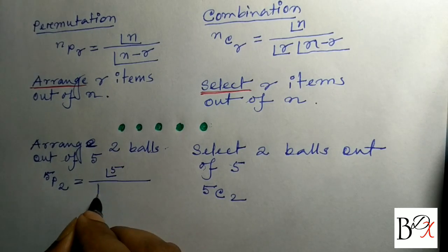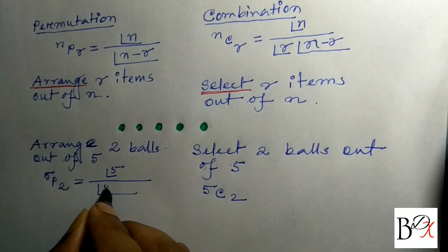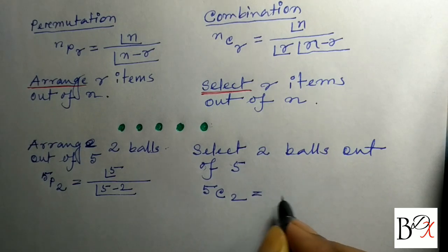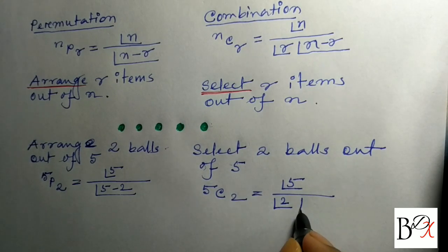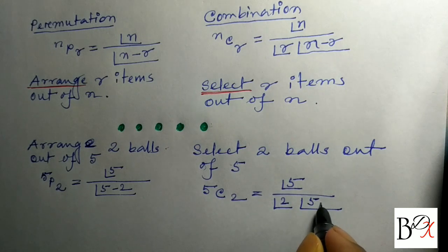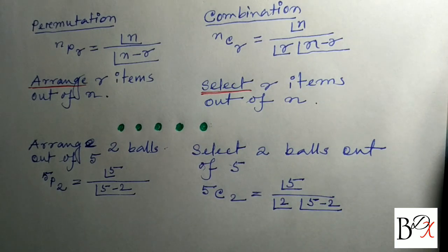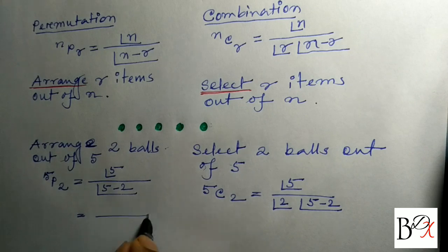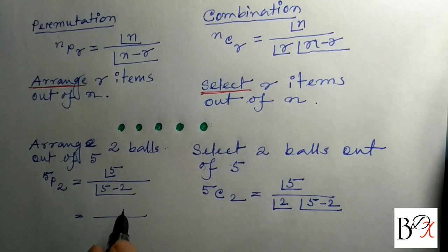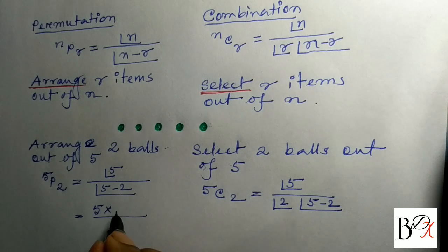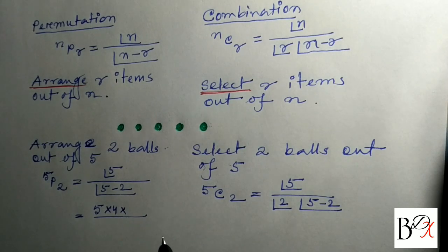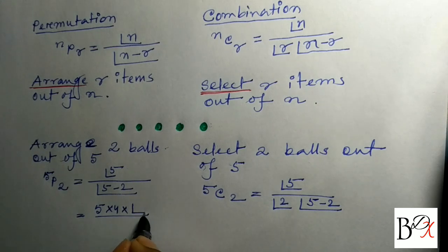So using the combination formula, 5C2 equals factorial 5 divided by factorial 2 into factorial (5 minus 2), which is factorial 5 divided by factorial 2 into factorial 3.